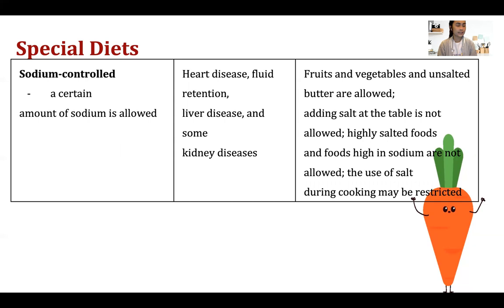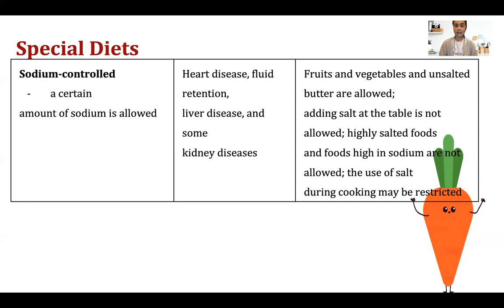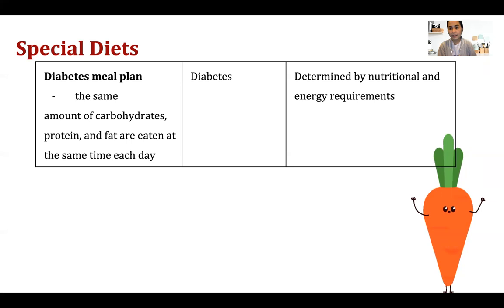Sodium-controlled diet is helpful for patients with hypertension, heart diseases, liver diseases, and kidney diseases — because all of these conditions involve hypertension. Excess sodium is not allowed because it will worsen the disease. Allowed foods include fruits, vegetables, and unsalted butter. Adding salt at the table is not allowed. Highly salted foods and foods high in sodium are not allowed, and use of salt during cooking may also be restricted.